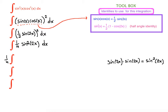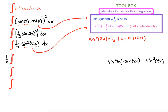What is sine squared of 2x? We're going to use our second identity — the half angle identity. Sine squared of 2x equals one half times (one minus cosine of 4x). Why 4x? Because we are doubling this angle, so 2x doubled becomes 4x. Substituting that identity gives us one half times (one minus cosine of 4x) dx.